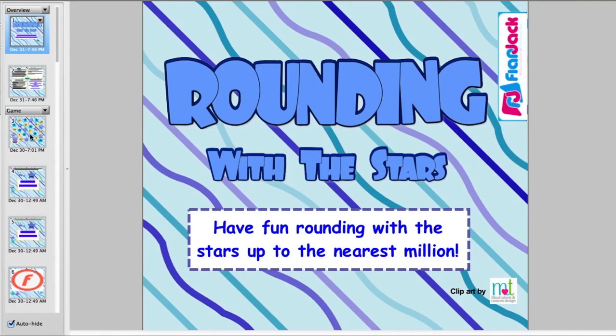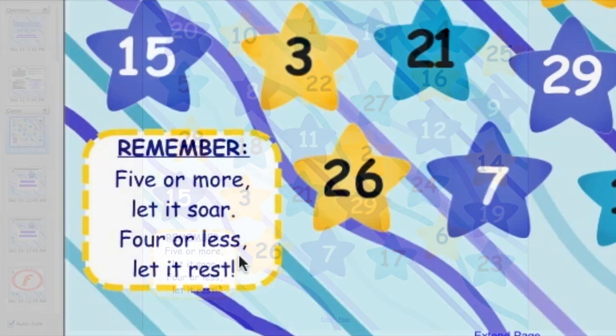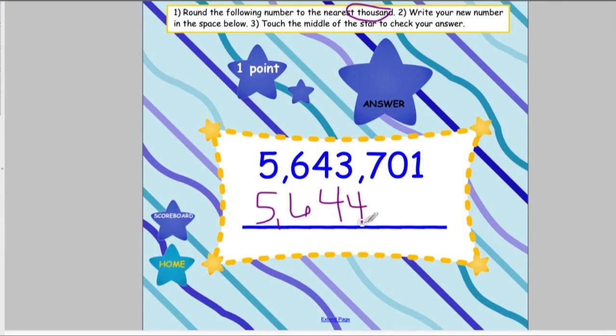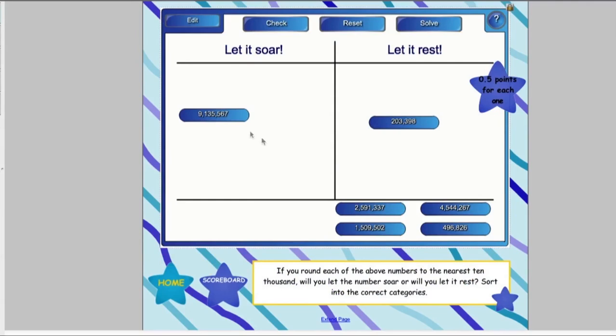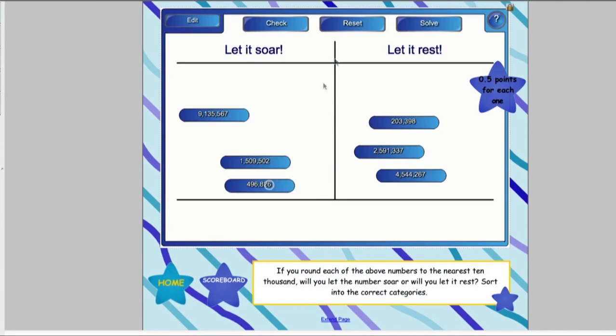In the rounding with the stars game, a nice little tip is provided. Five or more, let it soar. Four or less, let it rest. Students read the instructions carefully and rewrite the number rounded to the correct place. To check their answer, they touch the star. Rounding and estimation word problems are provided. In one activity, students will sort numbers depending on whether they will have to round up or let the number rest. They click on check to see how many numbers they answered correctly.